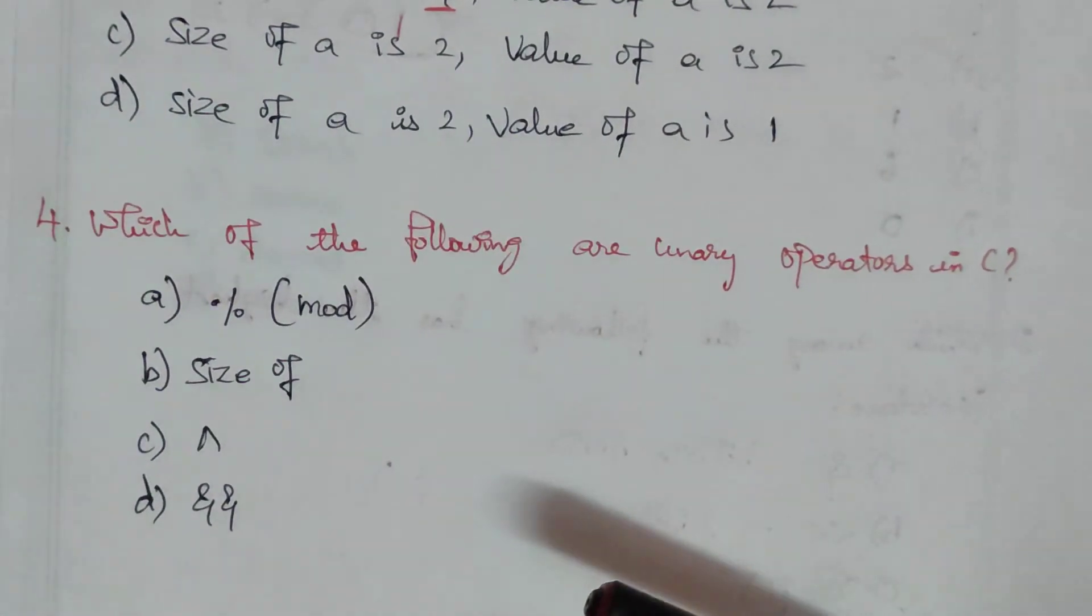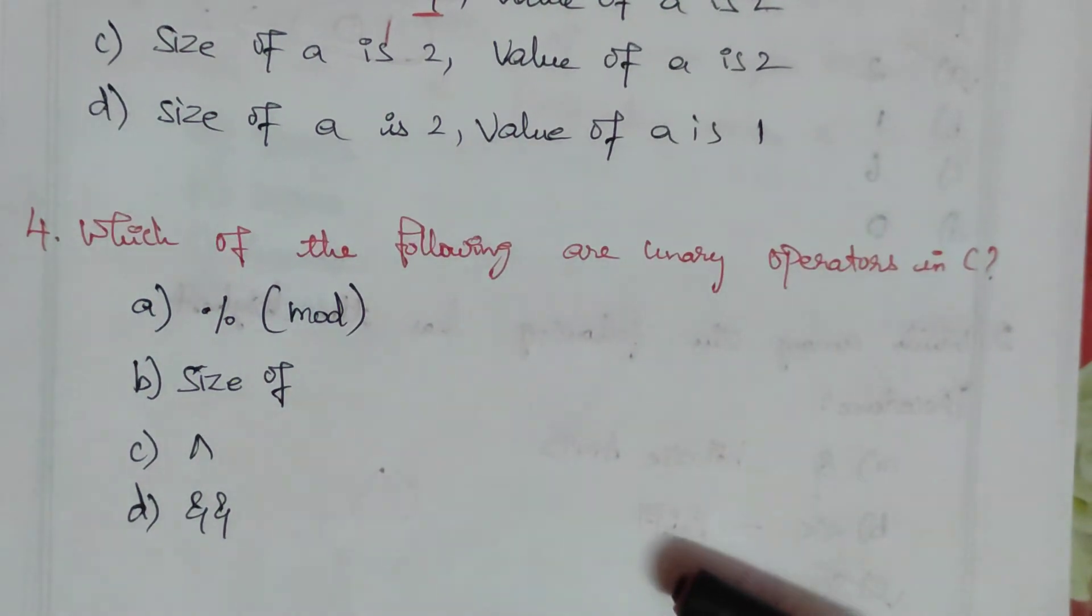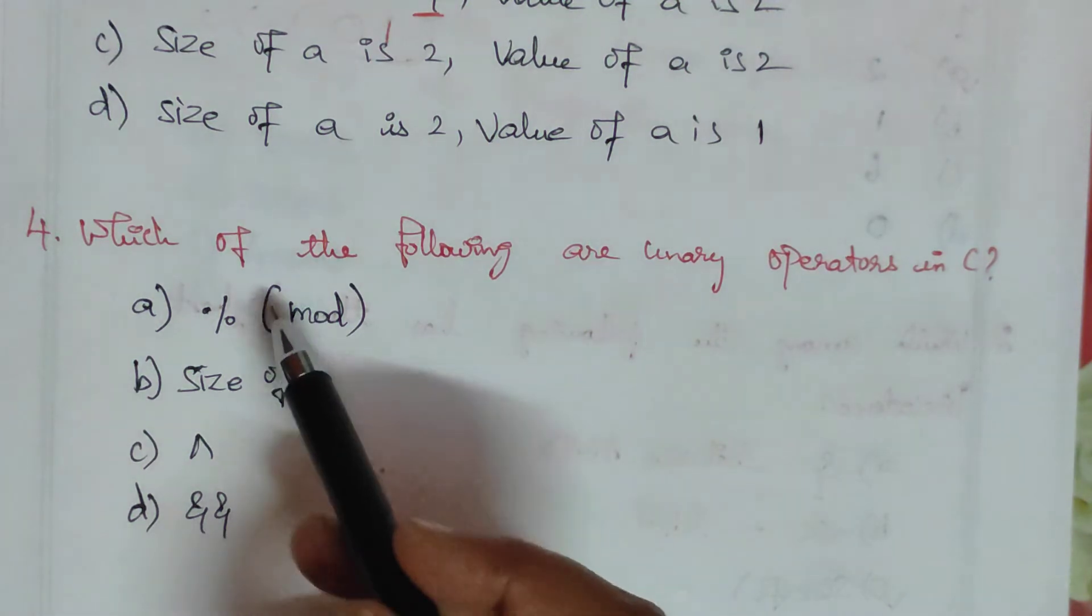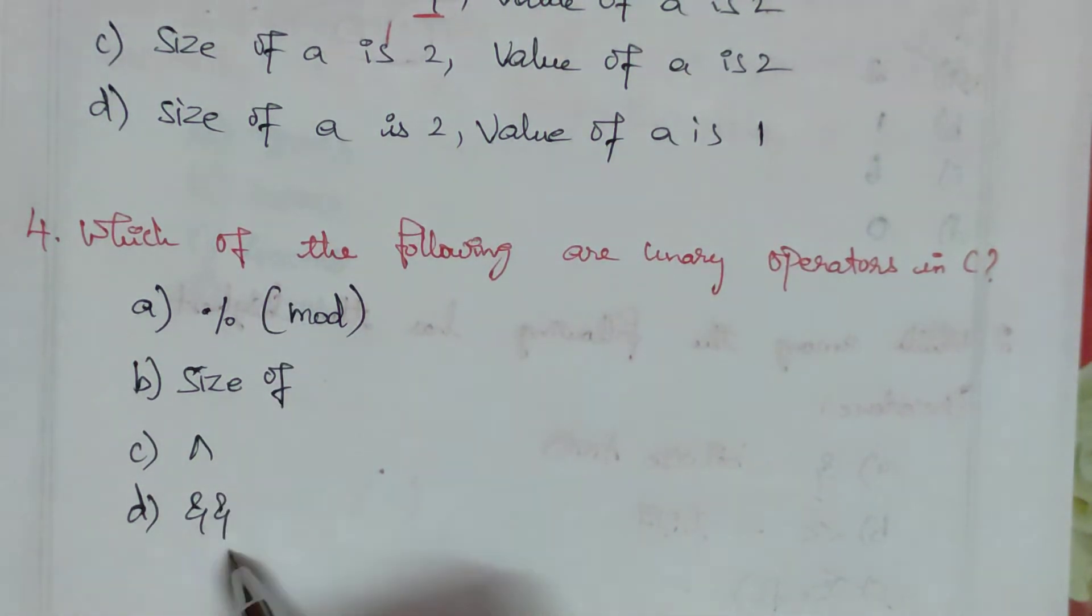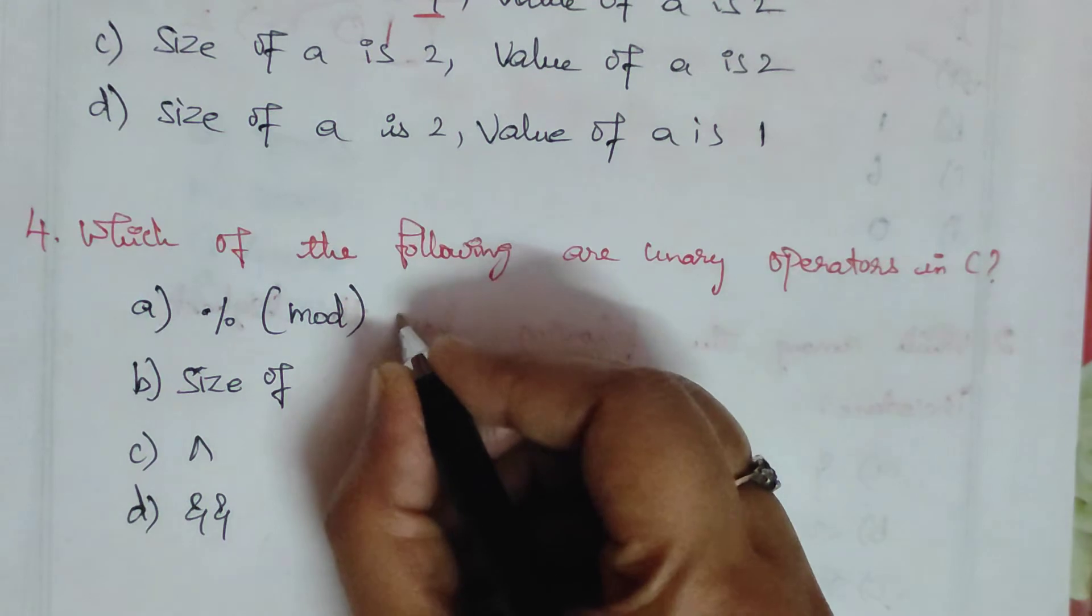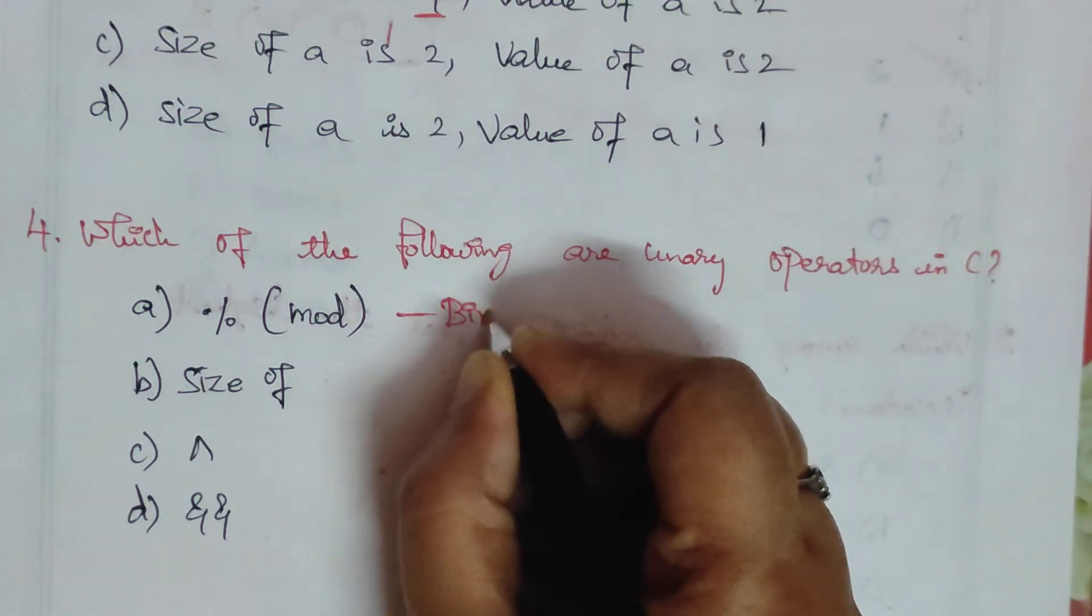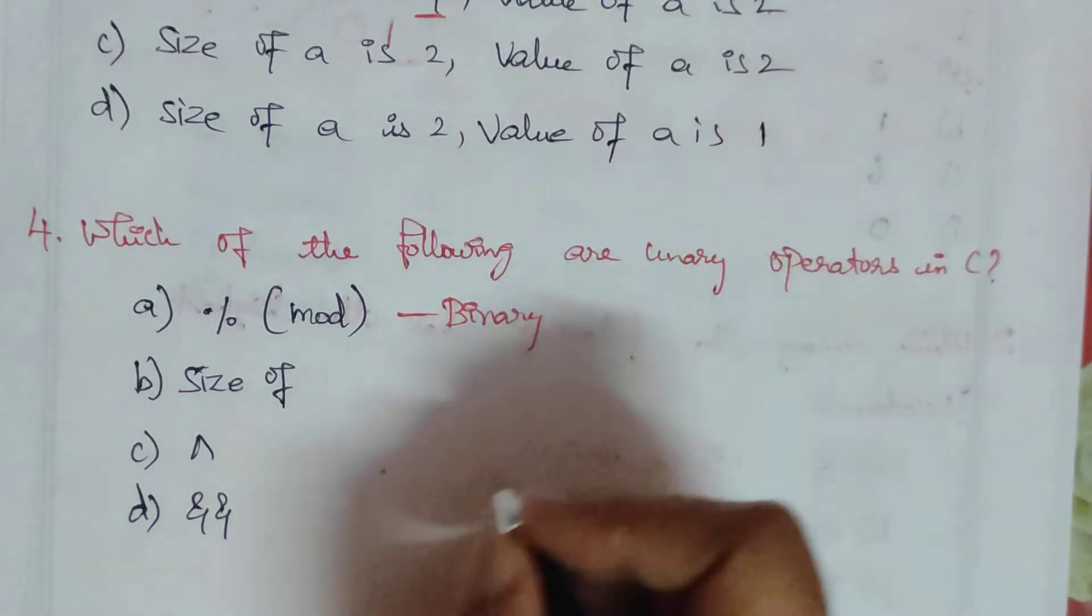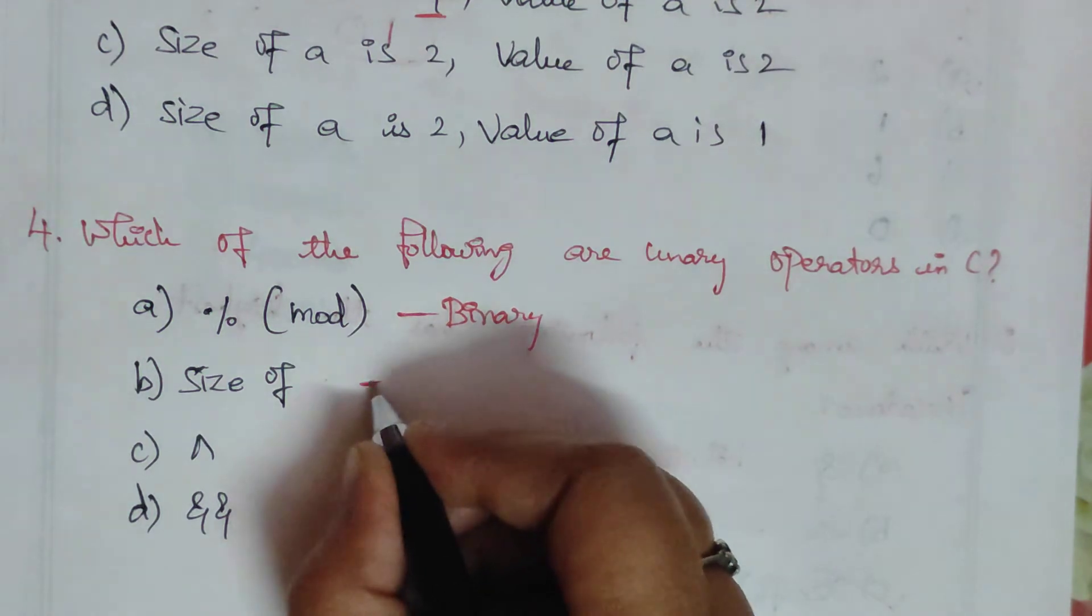The next question: which of the following are unary operators in C? The options are: mod, size of, power, and double ampersand. Mod is a binary operator. Size of is a unary operator.